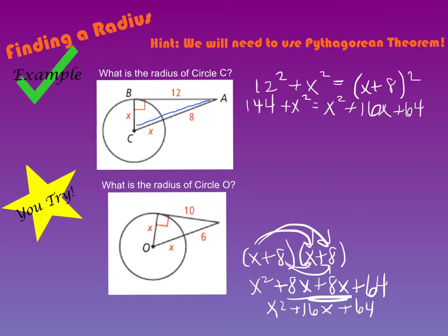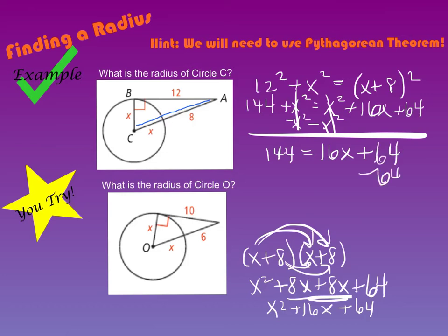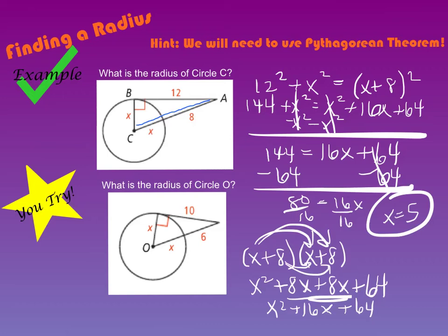I need to solve for x. Well, I see that my x squareds are going to cancel out. So I now have 144 equals 16x plus 64. So I'm going to move my 64 to the other side. 16x equals 144 minus 64 is 80. I'm going to divide by 16, and I get that x equals 5. So my radius in this problem is 5. All right, you've got a You Try. Go ahead, bring that to class.